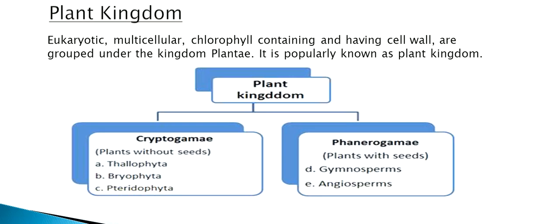Plant kingdom has been further classified into Cryptogamae, which are plants without seeds, and Phanerogamae, which are plants with seeds.